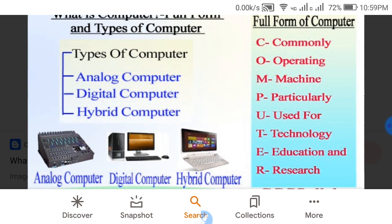Now, what you have to do: C for commonly, O for operating, M for machine, P for particularly, U for used for, T for technology, E for education, and R for research. You should learn this in a colorful pattern.